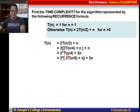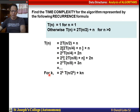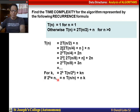Continuing, T(n/4) = 2T(n/8) + n/4, so it becomes 2³ T(n/8) + 3n. In general, after k steps this becomes 2^k · T(n/2^k) + k·n. Here 2^k corresponds to 8 = 2³, so the general formula is 2^k · T(n/2^k) + kn.